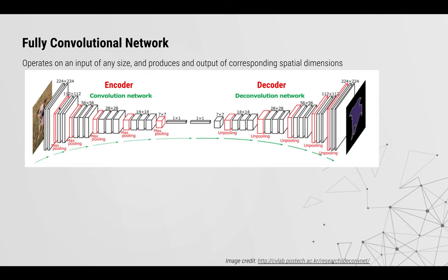When you try to enlarge from a very small spatial representation back to original input size using deconvolution, you've lost a lot of information during the encoding process. You already discarded much spatial detail, and trying to decode that information cannot fully restore what was lost. That's why you need the technique called skip connections — which retain information from finer, earlier layers to supplement the coarser decoded information.